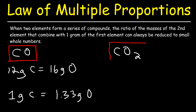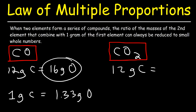Now let's focus on carbon dioxide. We have one atom of carbon in that compound, corresponding to 12 grams based on the periodic table. But notice that we have two oxygen atoms in that same compound. The atomic mass for one oxygen atom is 16, so for two of them it's going to be 2 times 16, or 32 grams.